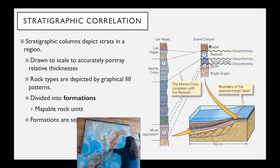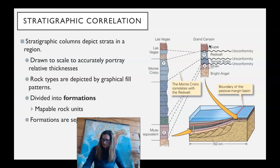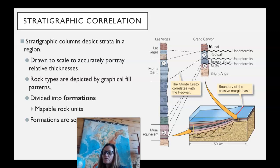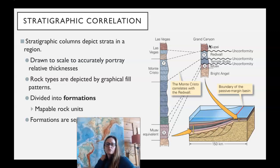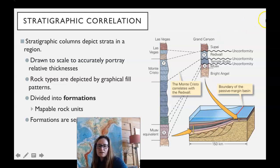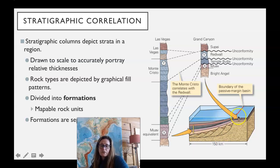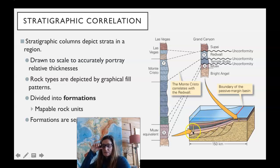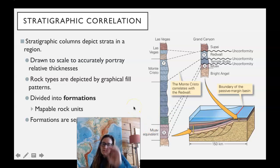On this map you can see northern Arizona, the Colorado River, and Nevada over here near Vegas. You can go across that much area and connect the units. What they've done on the bottom right is draw what that looks like — the Grand Canyon sediments were being deposited on the edge like a continental shelf of the ocean basin, and over in the Las Vegas area there's a deeper basin with more sediments piling up.